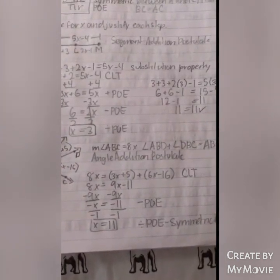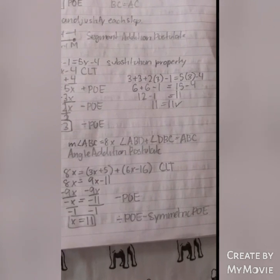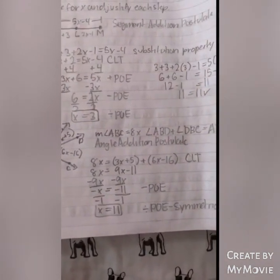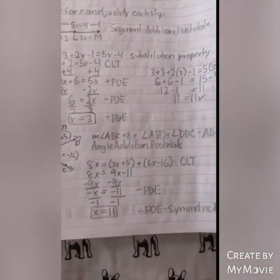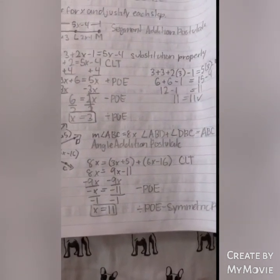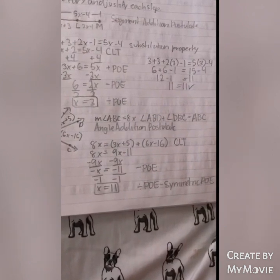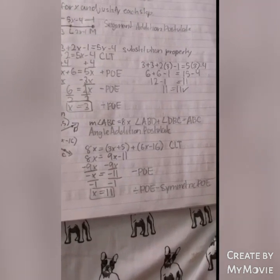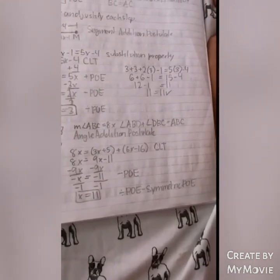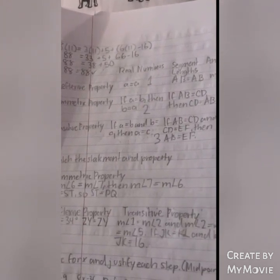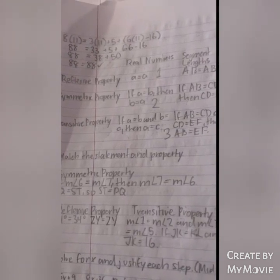Angle Addition Postulate problem: M∠ABC = M∠ABD + M∠DBC. Given: 8X = (3X + 5) + (6X − 6). Combining like terms: 8X = 9X − 11 (CLT). Subtracting 9X: −X = −11 (Subtraction POE). X = 11 (Division POE, Symmetric POE). Check: 8(11) = 3(11) + 5 + 6(11) − 6. 88 = 33 + 5 + 66 − 16 = 88. ✓